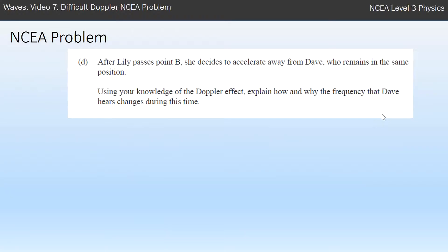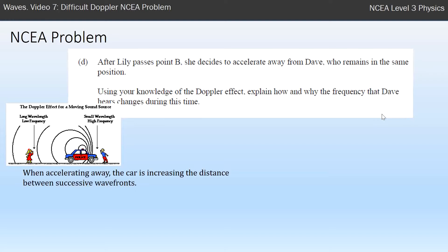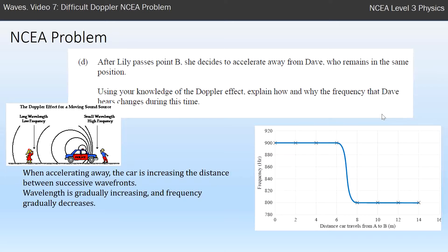Part D: after Lily passes point B she decides to accelerate away from Dave. Use your knowledge of the Doppler effect to explain how and why the frequency Dave hears changes. When accelerating away, the car is increasing the distance between successive wave fronts, so the wavelength gets bigger and bigger. Bigger wavelength means the frequency gradually decreases — lower and lower pitch. We could also show this with the graph: starting at 900 Hz, dropping to 800 Hz as it passes, then decreasing even further with acceleration. Using the formula: as v_s gets bigger, the observed frequency gets smaller because they have an inverse relationship.